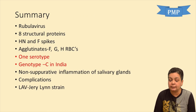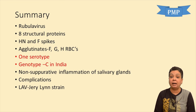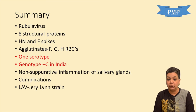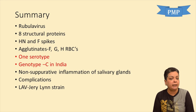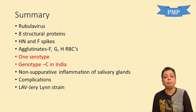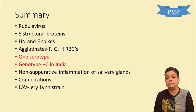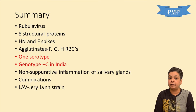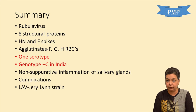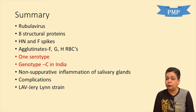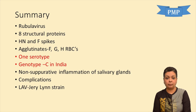To summarize: mumps virus belongs to the genus Rubula virus of the family Paramyxoviridae. It has eight structural proteins, with HN (hemagglutinin neuraminidase) and F (fusion glycoprotein) spikes embedded in the lipid envelope. It agglutinates fowl, guinea pig and human RBCs. There is only one serotype; among 12 genotypes, genotype C is common in India. It causes non-suppurative inflammation of the salivary glands. Key complications are epididymo-orchitis, oophoritis, meningoencephalitis, pancreatitis, thyroiditis, nephritis, and arthritis. A live attenuated vaccine using the Jeryl Lynn strain is available, given subcutaneously as MMR vaccine.